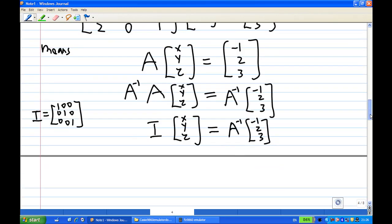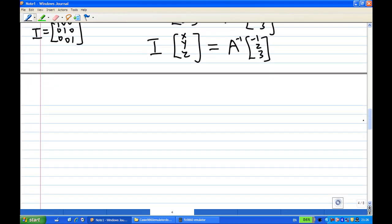Now, identity matrix times [x; y; z] will still be [x; y; z]. So, [x; y; z] in this case is A inverse times [-1; 2; 3].